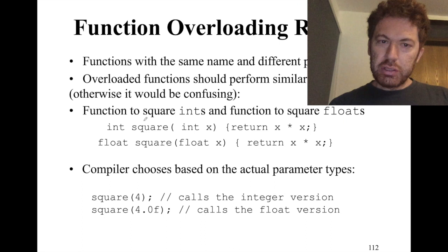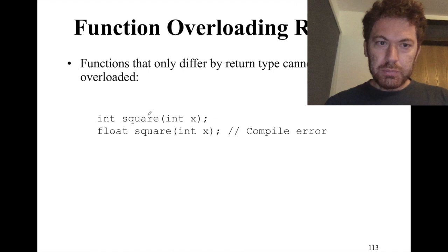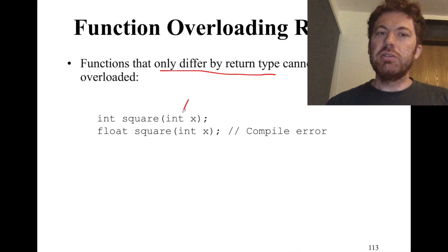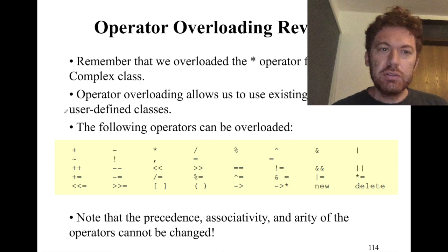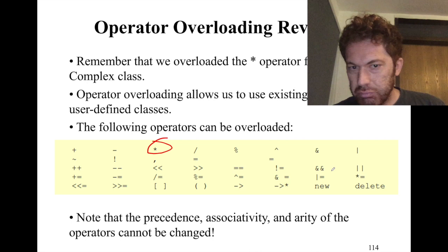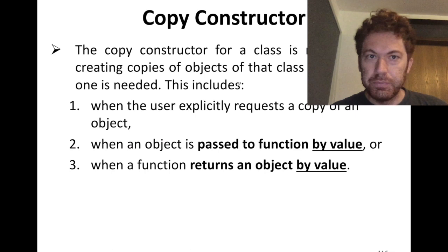Function overloading revisited: same function name with different parameter types, different number of parameters, or both. Functions that only differ by return type cannot be overloaded — the parameters must be different. We have seen operator overloading — there are many operators that can be overloaded, but only existing operators can be overloaded; you cannot create new operators.